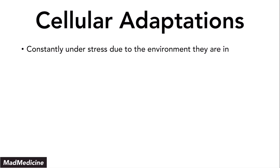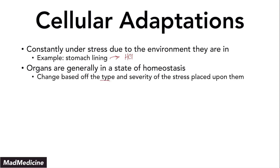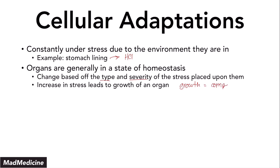Our cells and our body are currently under a lot of stress because of the environment they're in. One example is the stomach lining, because the stomach lining is constantly being eroded due to being exposed to hydrochloric acid. Organs have developed in a way to maintain homeostasis, and they're able to combat the stress placed upon them. An increase in stress is going to lead to the growth of an organ occurring — the growth of an organ is a compensatory mechanism.